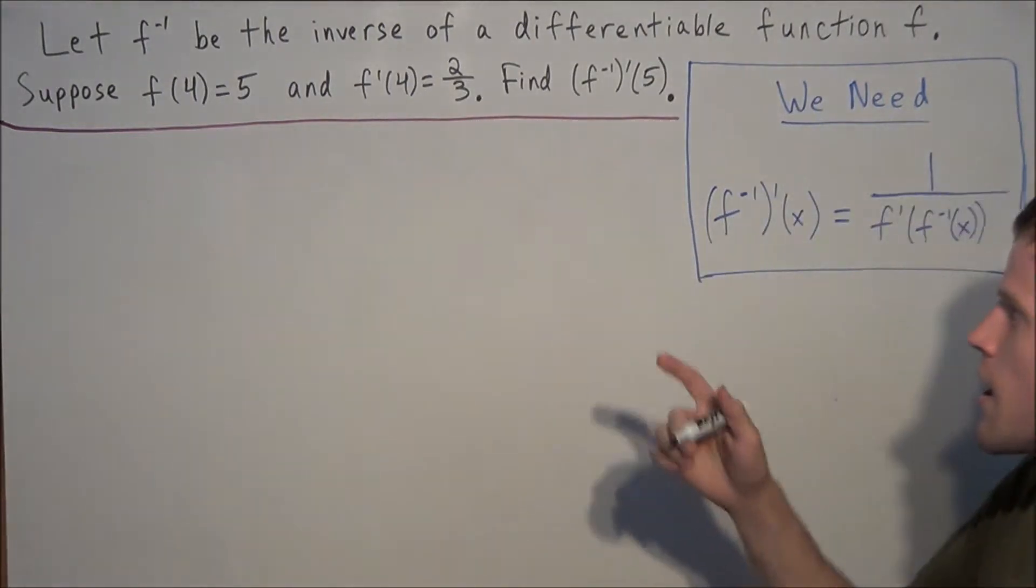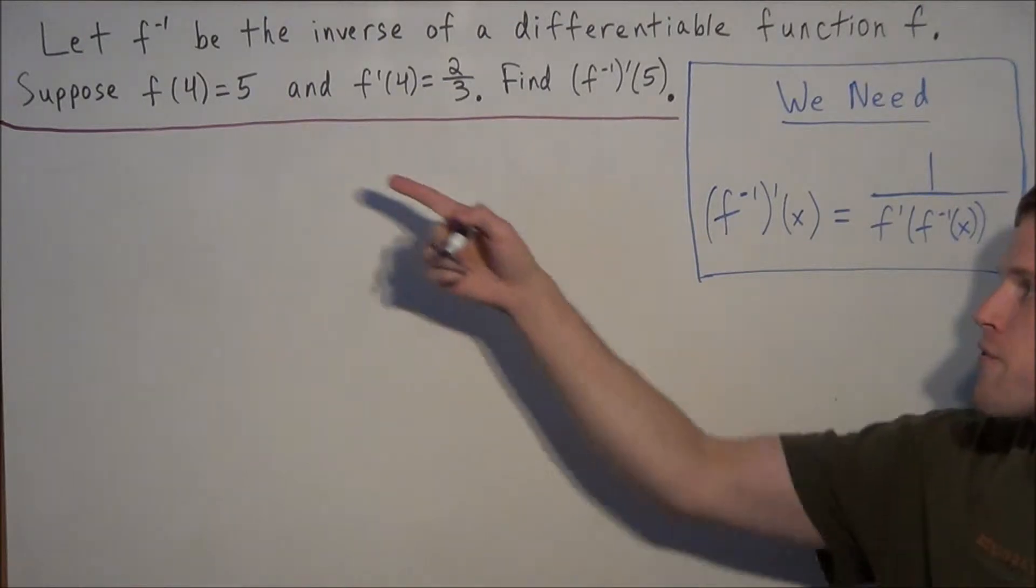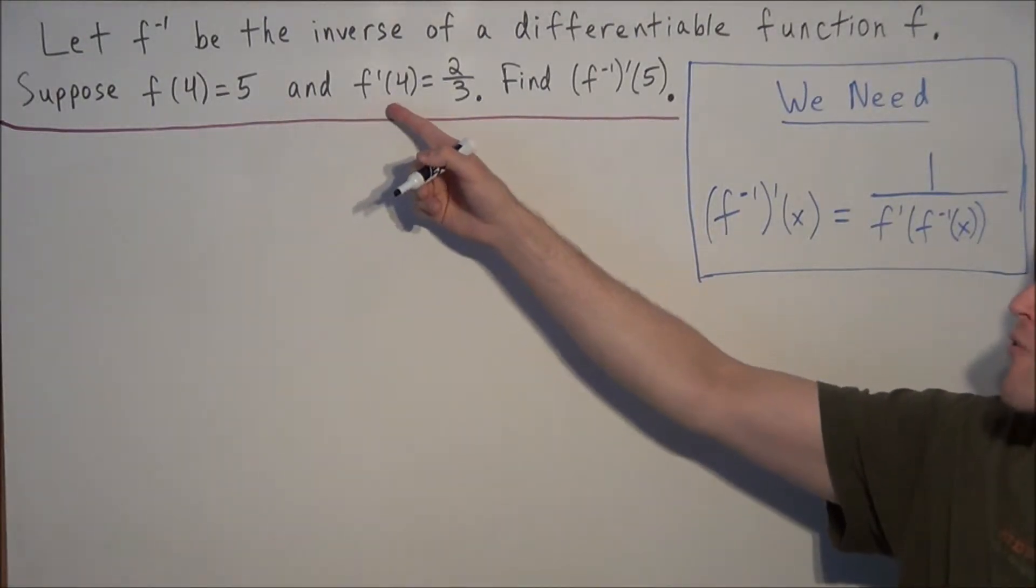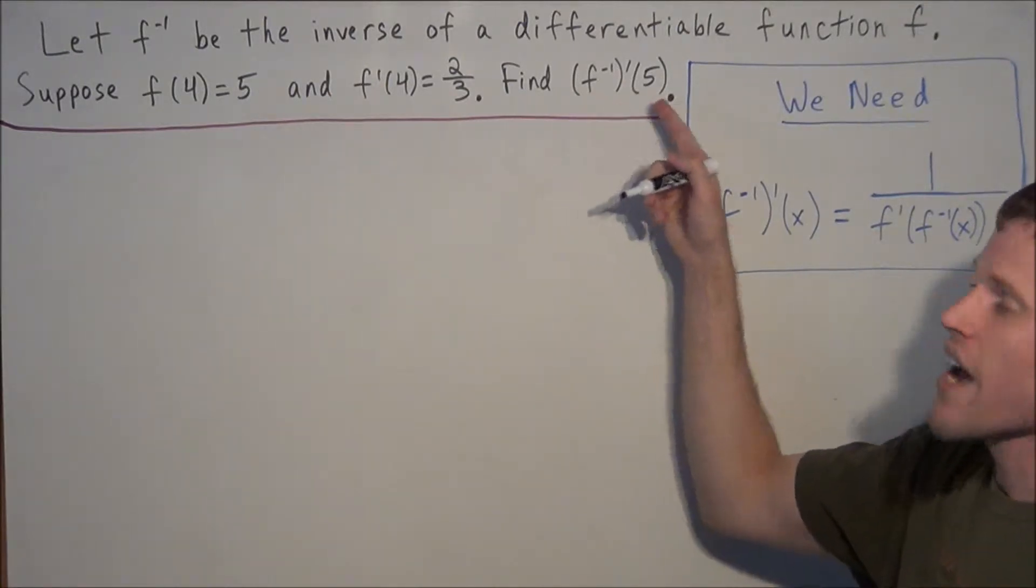So we have, let f inverse be the inverse of a differentiable function f. Suppose f of 4 equals 5 and f prime of 4 equals 2 thirds, and we need to find the derivative of f inverse at 5.